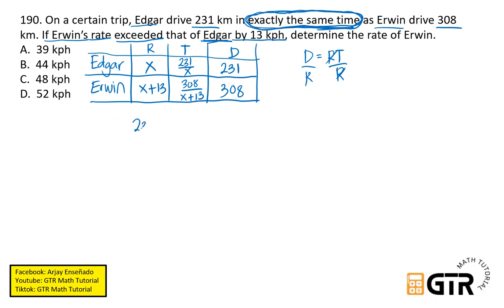So ang time ay distance divided by R. So therefore, we have for time is 231 over x. And then for time of Erwin is 308 over x plus 13. And then, ang equation natin ay equate na lang natin yung time nila dahil nga dito sa word na exactly the same time. So ang working equation natin ay 231 over x equals 308 over x plus 13. So madali nang isolve ito since proportion na lang siya, so i-cross multiply na lang natin ito. So cross multiply. We have 231 times x plus 13 equals 308 times x. Then just solve for x. So ang hinahanap natin ay determine the rate of Erwin. So x plus 13 ang hinahanap natin. Pag na-solve na natin yung x, ay mag-add pa tayo ng 13 dahil ang hinahanap ay rate ni Erwin.